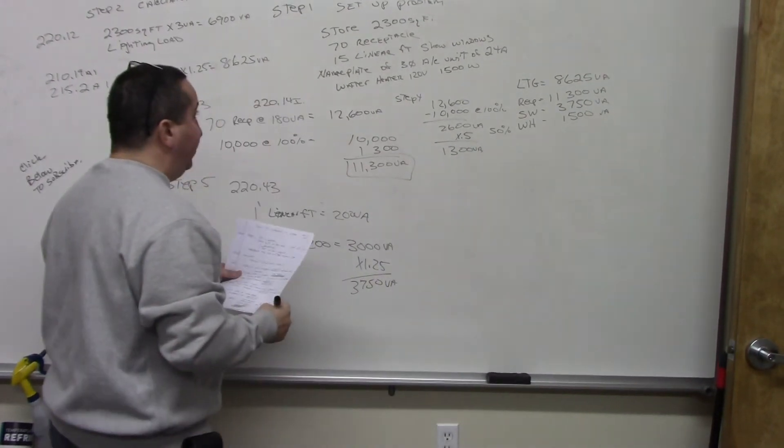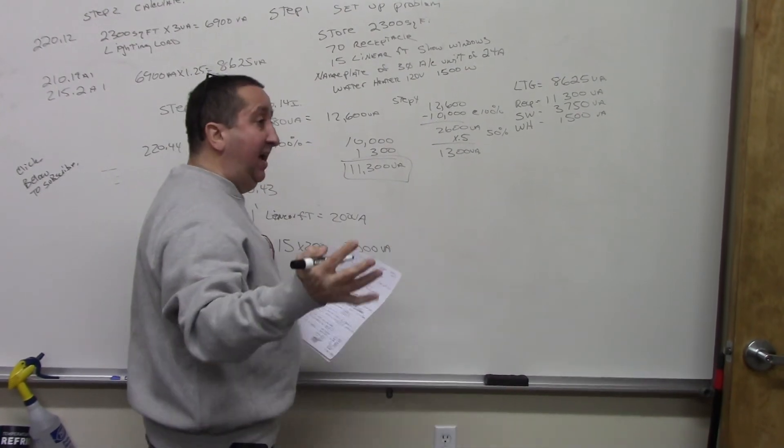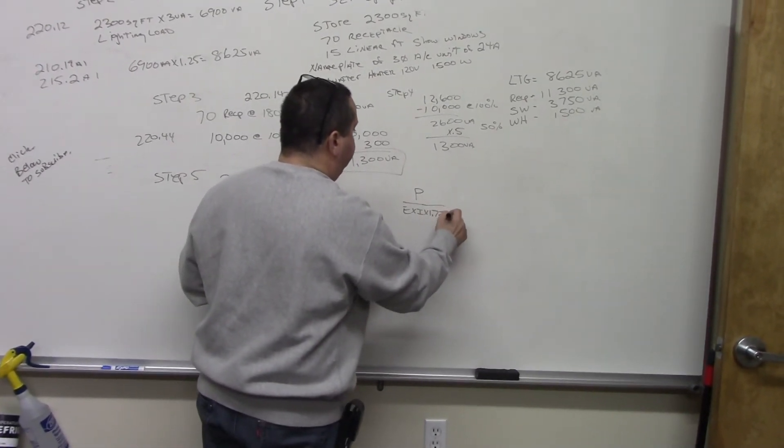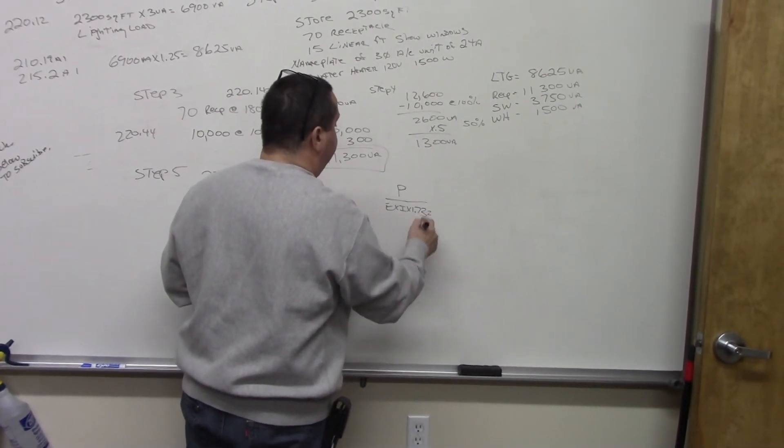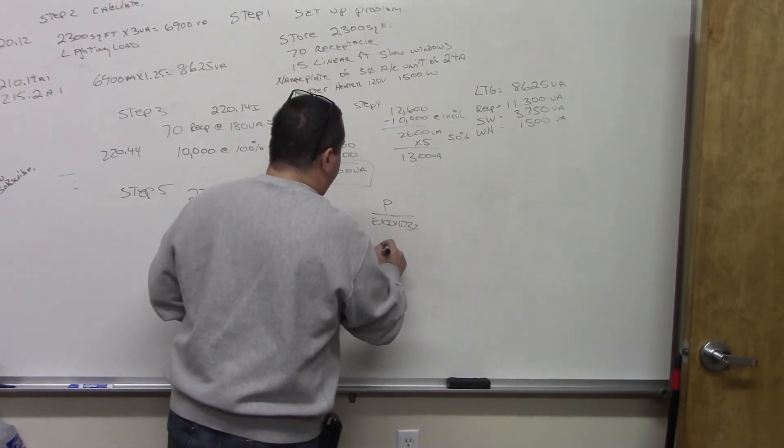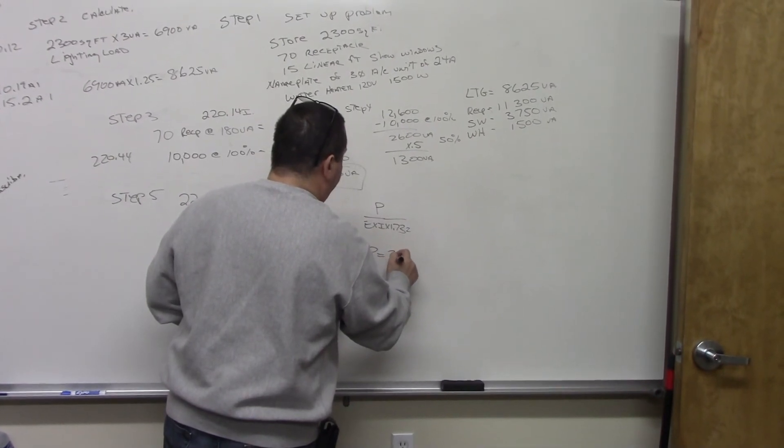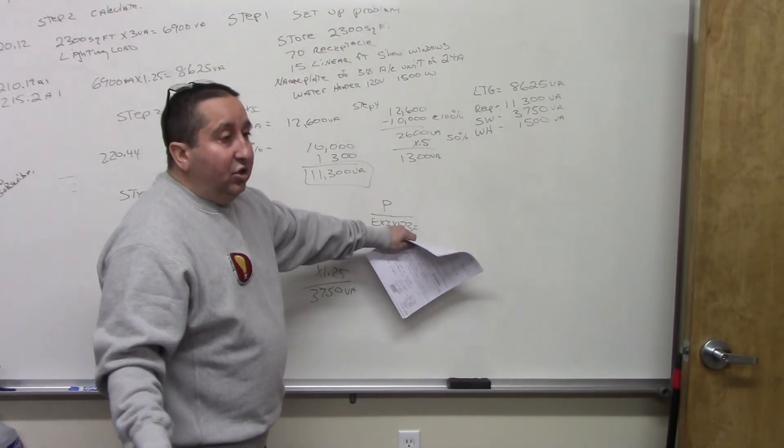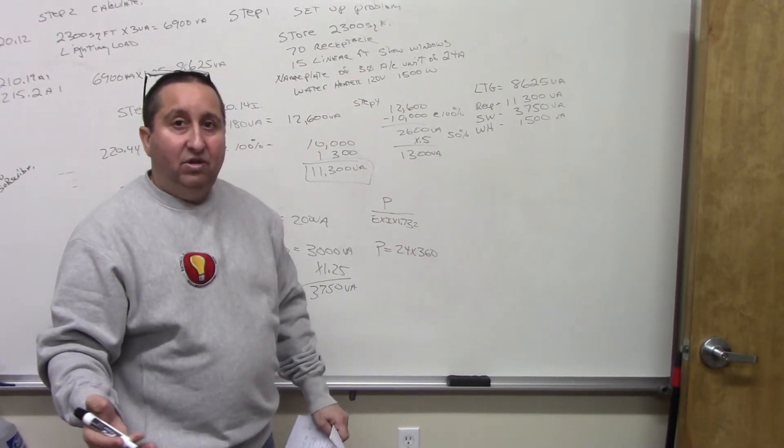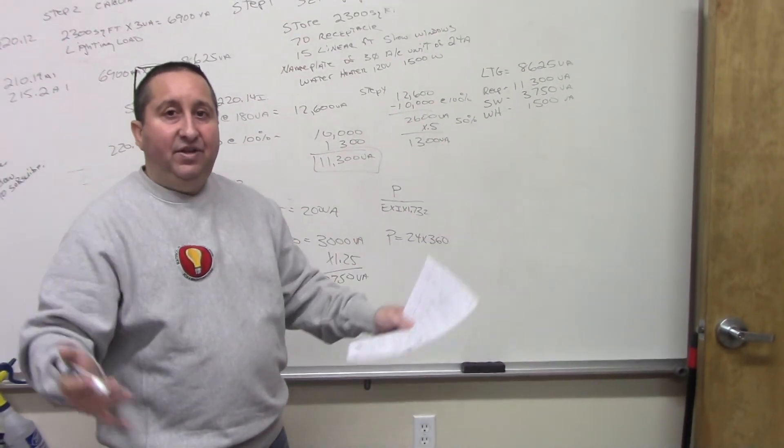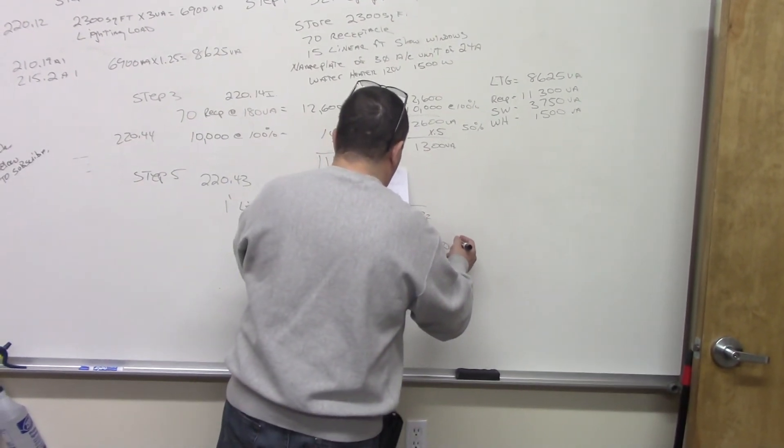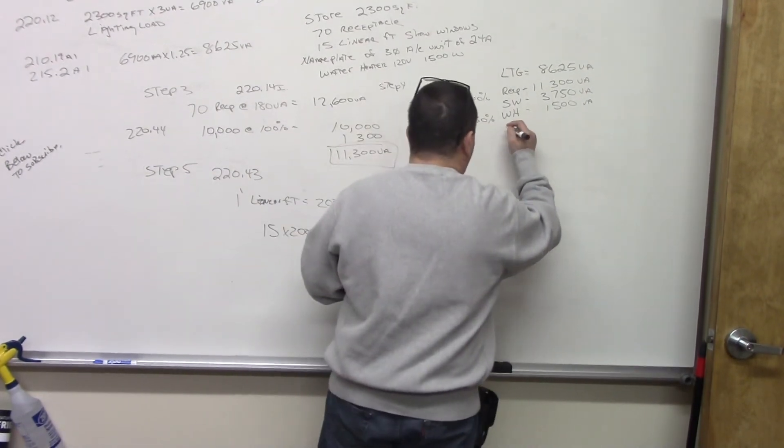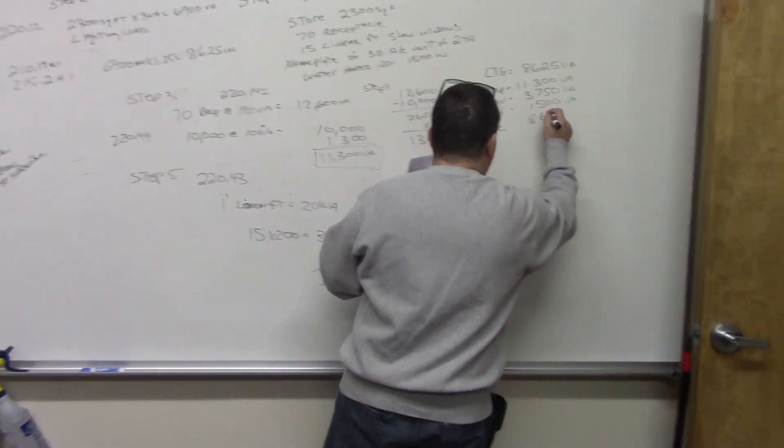And now, the last one is your air conditioner. We have the 24 amps, and we want to find out for power. So, P equals E times I times 1.73, because it's 3 phase. So, we want to find power. P equals 24 times 360. Where do I get 360? It's a constant. If you take 208 times 1.73, it's 360. It's a circle. That's what 3 phase is. So, if you multiply that, you come out with 8,646 volt amps. So, we're going to put down the AC, 8,646 volt amps.